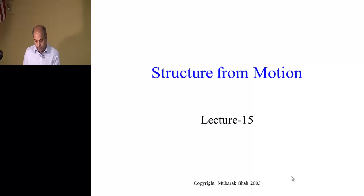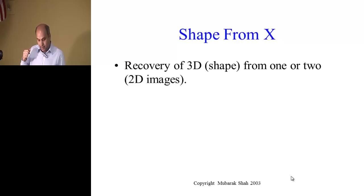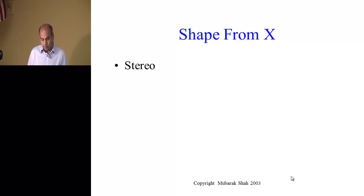We're going to talk about this new topic called Structure from Motion, which falls under a bigger topic called Shape from X. The idea is to recover the 3D shape from one or two images, and this is a very big topic in computer vision. Images are 2D, the world is 3D — you get images which are projections of 3D onto 2D, and you want to recover 3D information. There are many methods to do that.